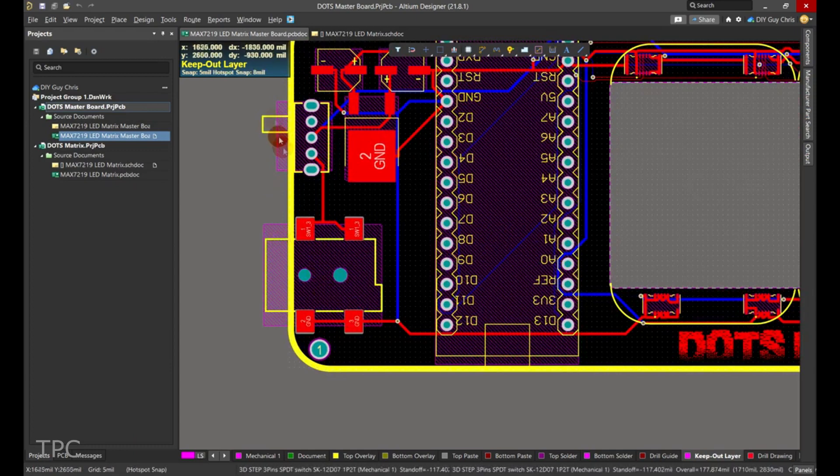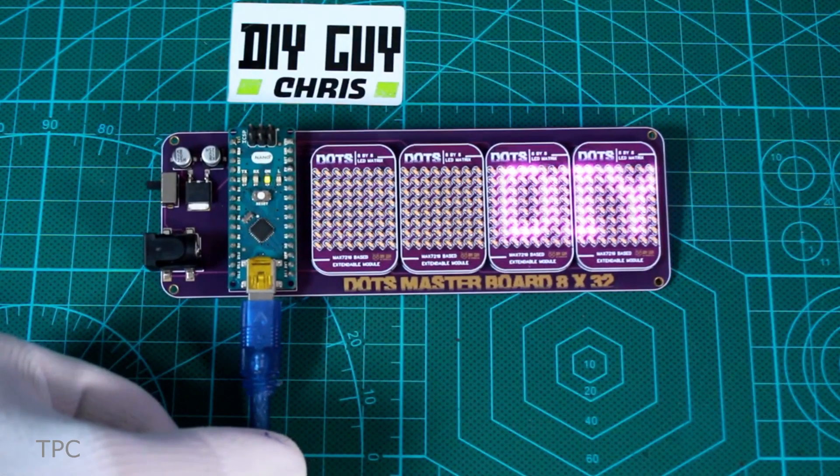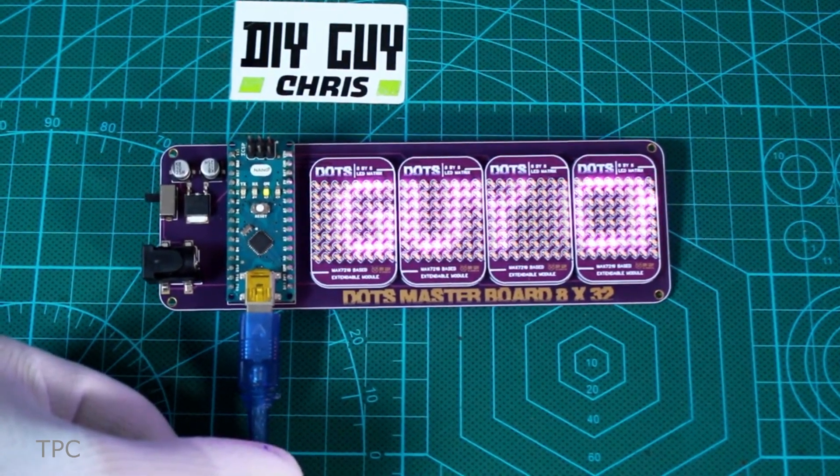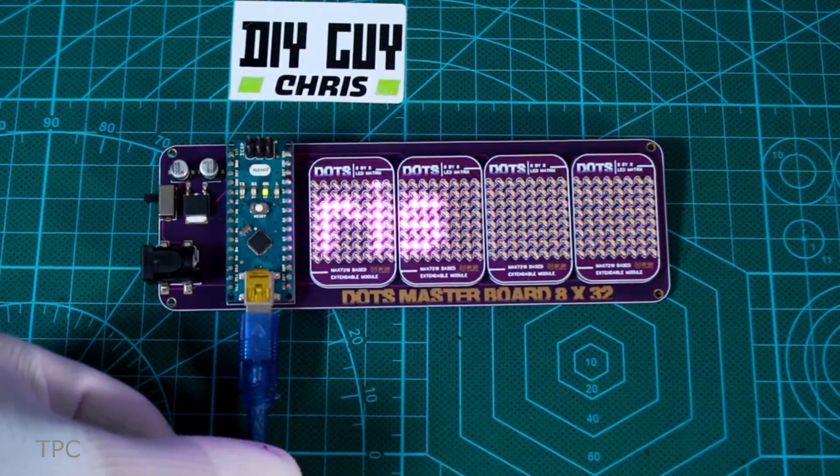The host board includes an Arduino Nano, a power jack connector, and an on-off switch. Once the code is uploaded, the LEDs light up and the matrix starts scrolling the message.